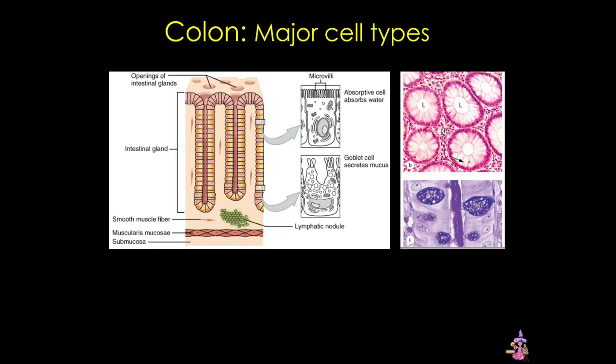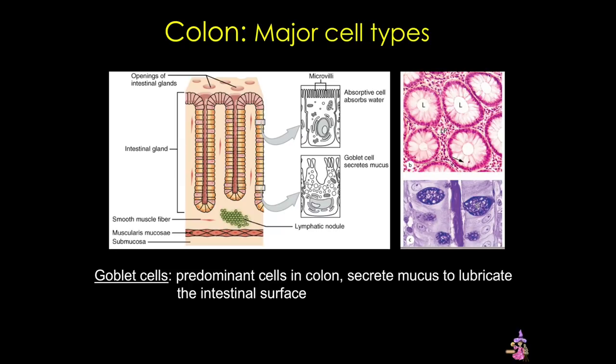The epithelium also contains goblet cells. In fact, the colon has a much higher proportion of goblet cells than the small intestine. Stem cells are also present at the base of the glands. The epithelium of the colon turns over very rapidly, and so the mucosa is very sensitive to processes that interfere with cell division. This could be problematic, since radiotherapy or chemotherapy targeting malignant cells could also cause loss of the epithelium, leading to nausea, vomiting, and diarrhea.